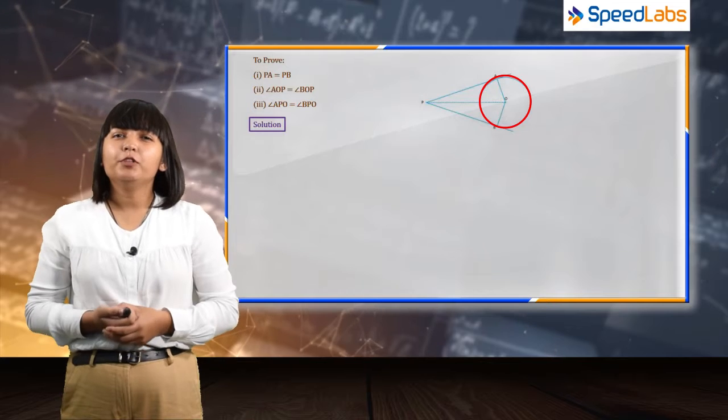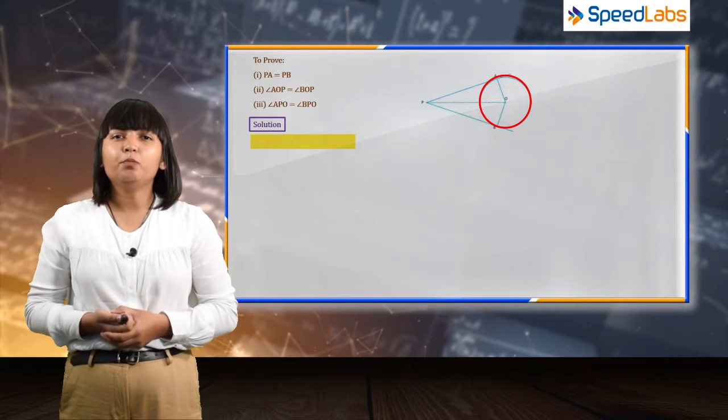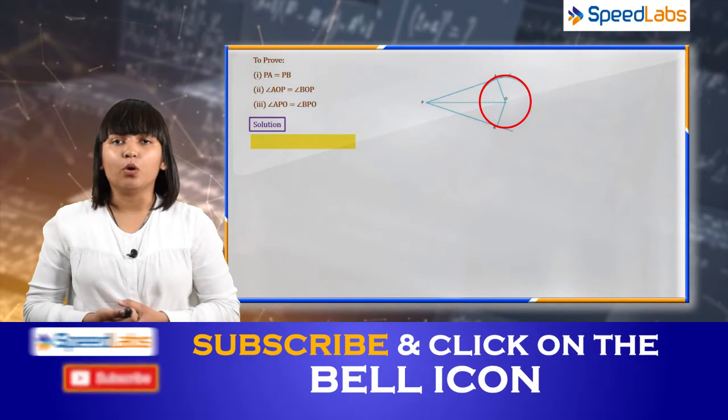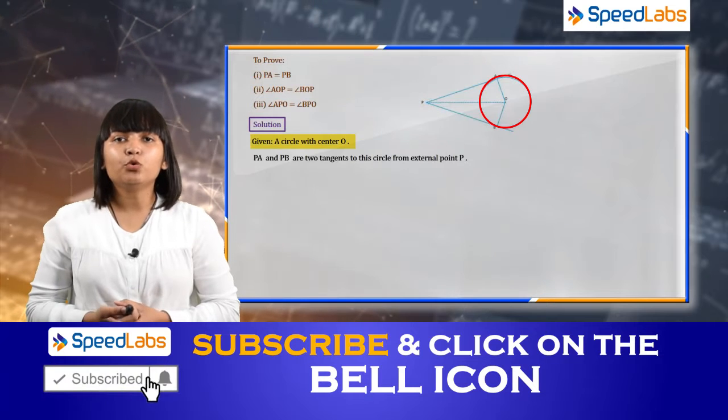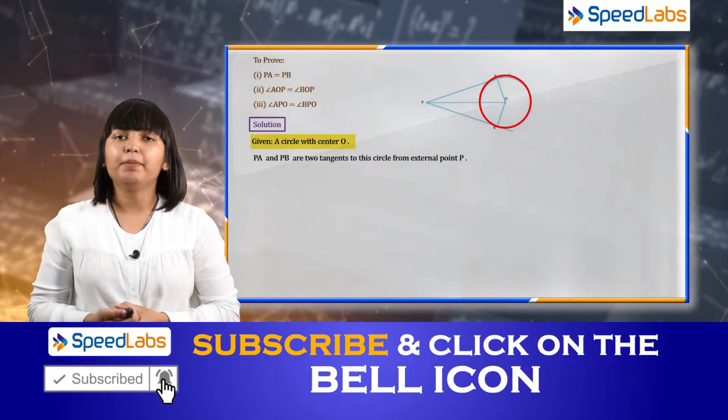In order to prove the following three points, we need to prove the given two triangles congruent. We can see in the figure that there are two triangles PAO and PBO.